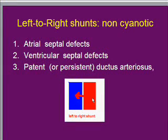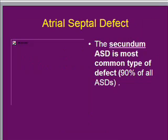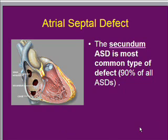In ASD, VSD, and patent ductus arteriosus, we can get a left-to-right shunt, which means when the patient is born they look like a normal child. Atrial septal defect is one of the most common types of defects, though the most common type of congenital heart disease is VSD, and ASD comes only after that.